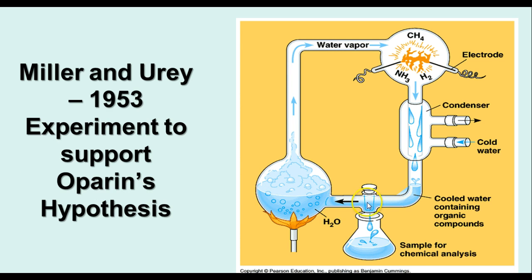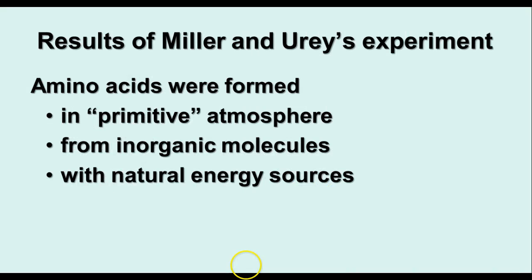After a period of time, they took a sample for chemical analysis, and what they found was there were some organic molecules in there that had not been there before — things like amino acids and various other compounds. Later experiments have shown the formation of even nucleotides by a similar kind of process. So they formed amino acids in a primitive atmosphere from inorganic molecules with natural energy sources, and that gave some supporting evidence to Oparin's original hypothesis.